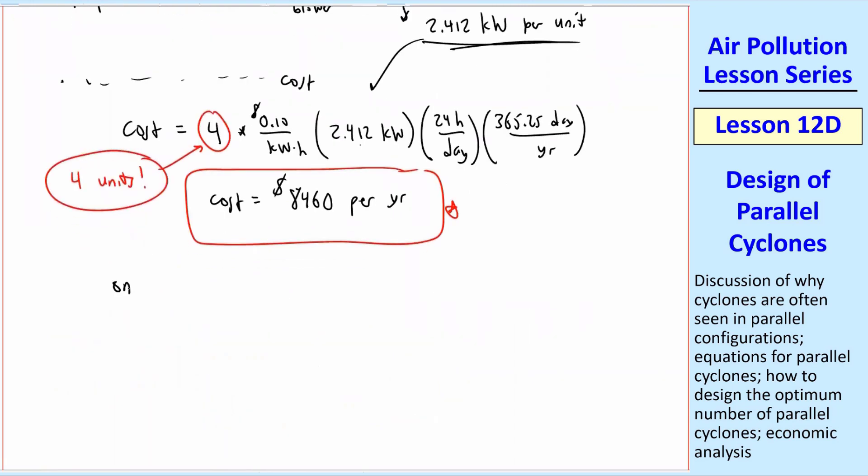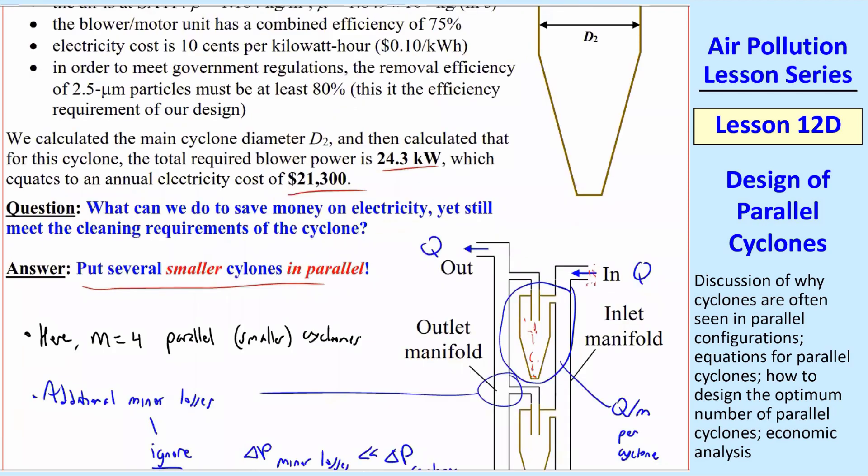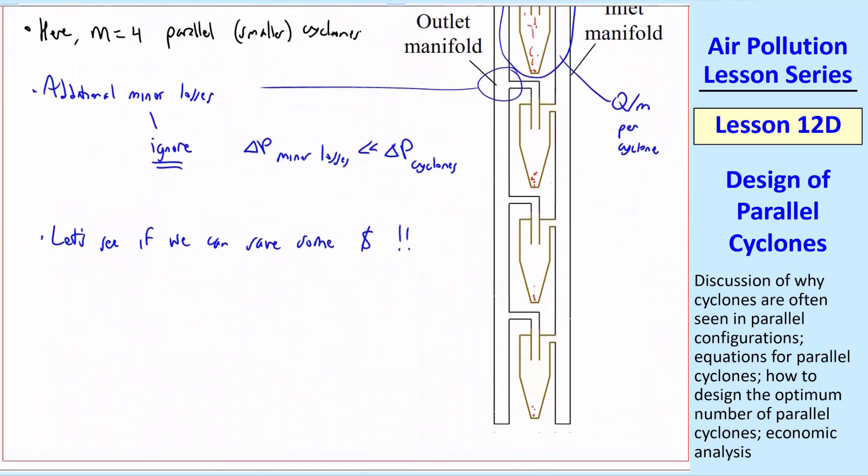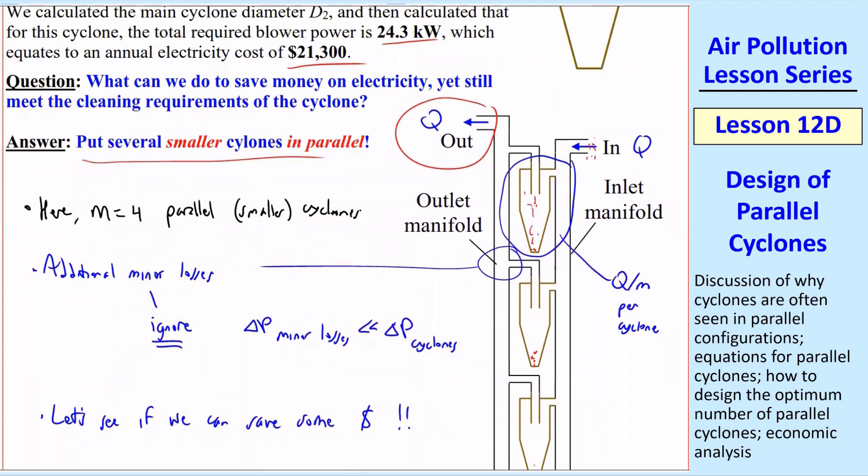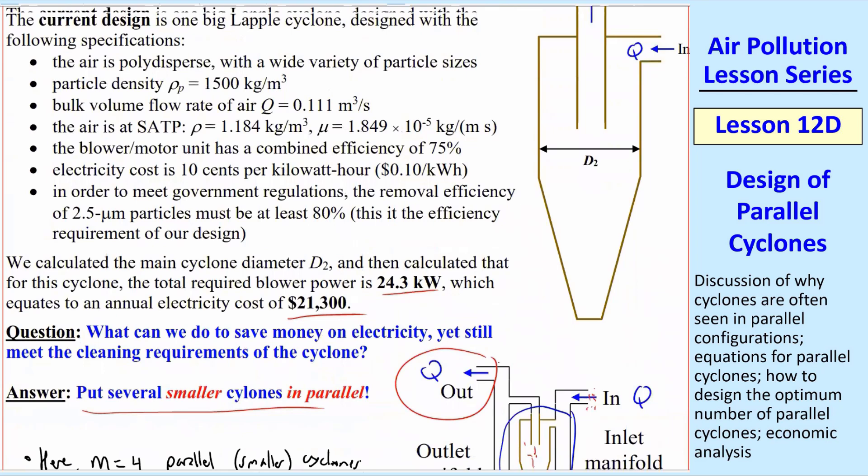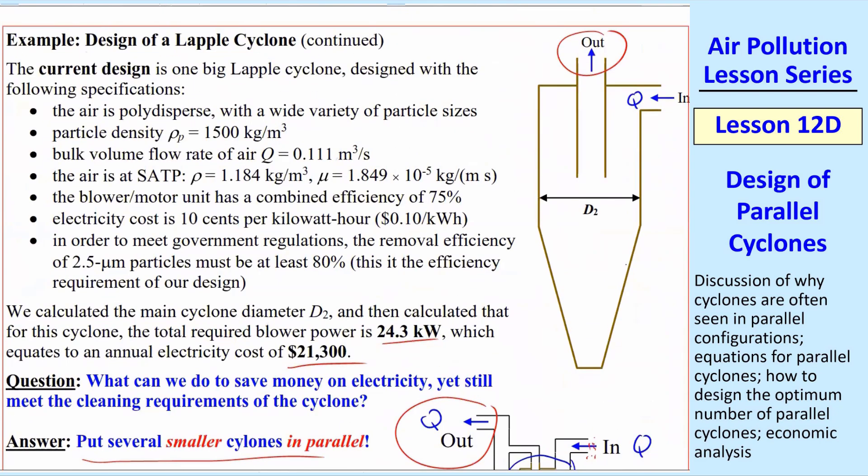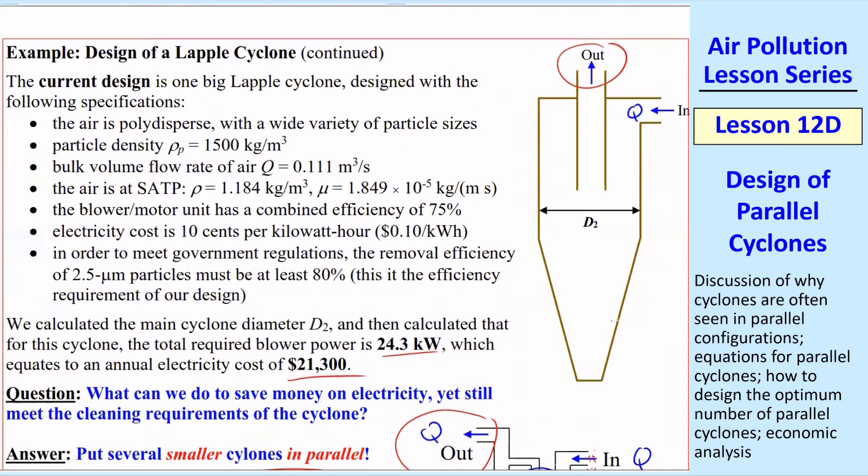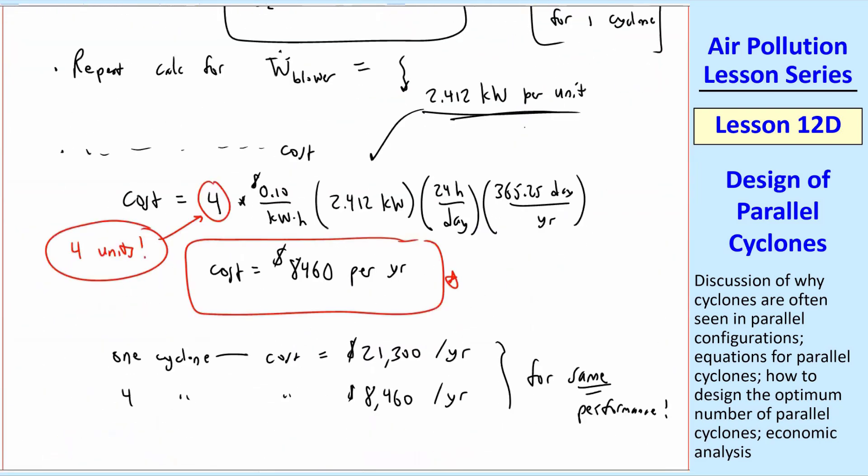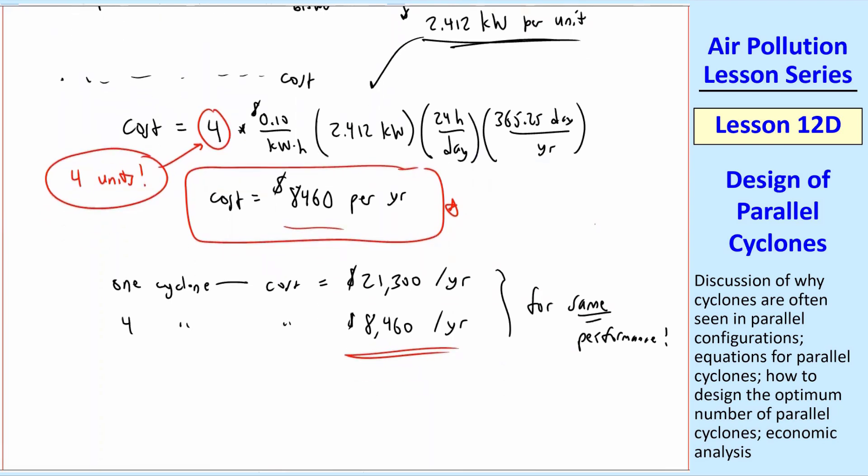And just to compare, for one cyclone, cost was $21,300 per year. And for four cyclones, the cost turns out to be $8,460 per year. And this is for the same performance, all right? In other words, the air coming out of this cyclone, you can, like, in your mind, put this all in a big box and just have an inlet and an outlet, and you don't really know what's going on inside. All you know is you have cleaner air. But that Q coming out will be identical to this Q coming out. And the mass concentration of the particles will be identical as well because we have the same cut diameter. We just happen to split this into four units. So we have the same exact air coming out in each of these cases, but we've saved quite a bit of money. And so that, my friends, is why you see cyclones in parallel a lot of the time.